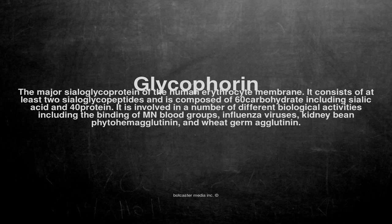Glycophorin. The major sialoglycoprotein of the human erythrocyte membrane. It consists of at least 2 sialoglycopeptides and is composed of 60% carbohydrate, including sialic acid, and 40% protein.